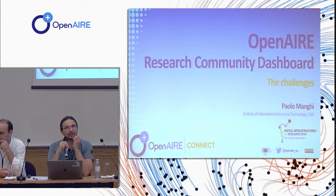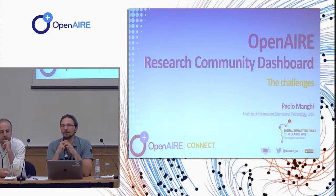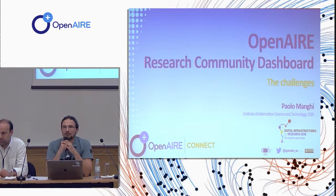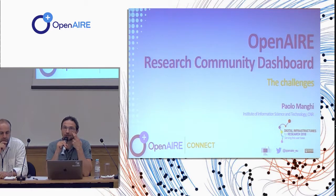So there is a distinction — and this is the only one we found, maybe you can find another one — between a group of scientists who are a group because of research interests, like a ResearchGate, where I want to know everything that can help me perform my research. And instead, a group of scientists or an organization, like a research infrastructure, for example, that wants to collect information about all the objects being produced thanks to the research infrastructure. This is more like a research impact analysis. So you don't want to have in this research community dashboard objects that are not somehow produced or involved with the services of the research infrastructure.